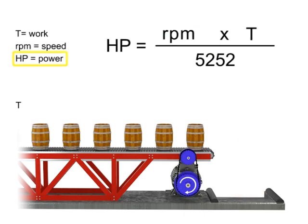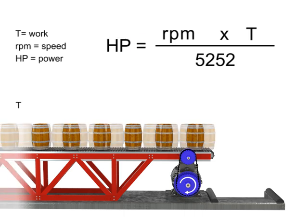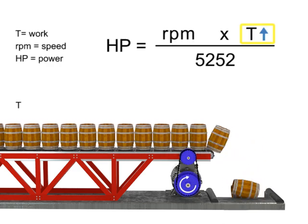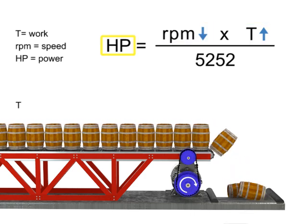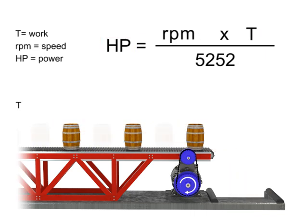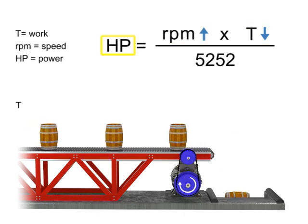If horsepower remains constant, then speed and torque are inversely proportional. As the torque increases, speed decreases to maintain constant horsepower. As torque decreases, speed must increase to maintain constant horsepower. Let's say we want the horsepower of our motor to remain constant but wish to increase the torque. If torque increases, the speed of the conveyor decreases so that the horsepower required of the motor remains constant. Similarly, if the torque decreases, the speed of the conveyor increases and the horsepower generated by the motor remains constant.